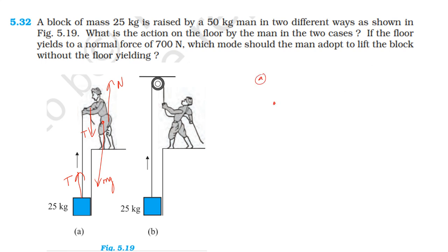In the first case, forces acting on the man include the normal reaction N and the tension force. In the second case, the man has mg acting downward and normal reaction N dash, along with the downward component.